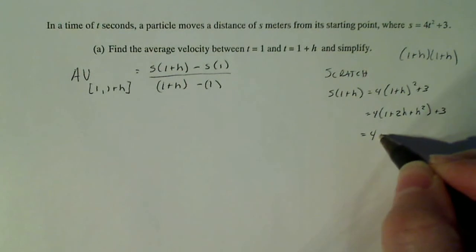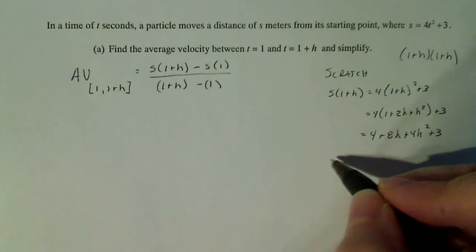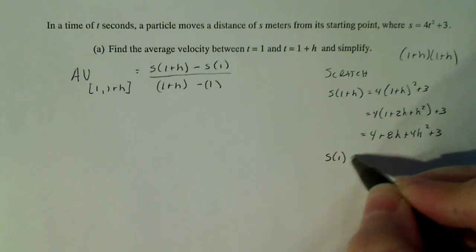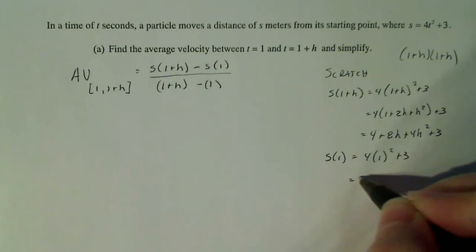Continuing, this is 4 plus 8h plus 4h² plus 3. S of 1 is equal to 4 times 1² plus 3, which equals 7.